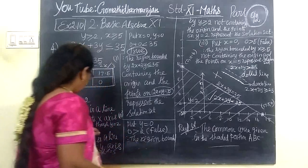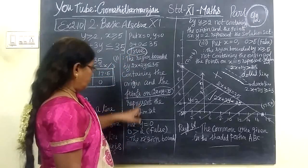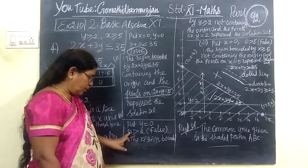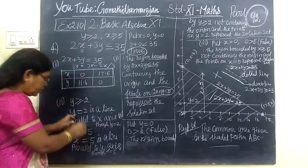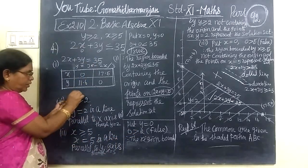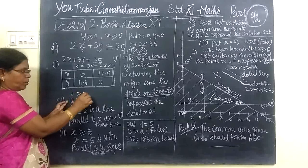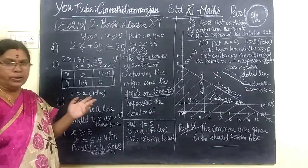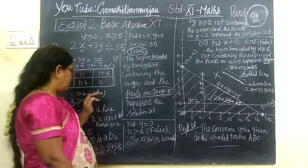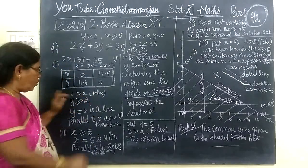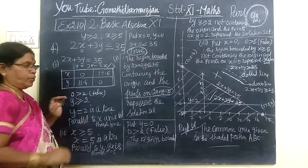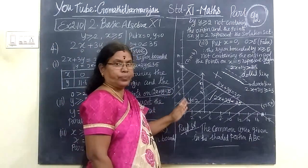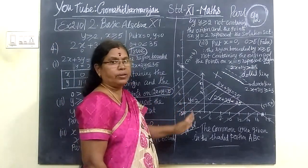Now coming to this one — y greater than or equal to 2. Put 0 greater than 2: this is false. Then y not greater than 2, sorry — 0 not greater than 2, it is false. False means not containing the point (0, 0).